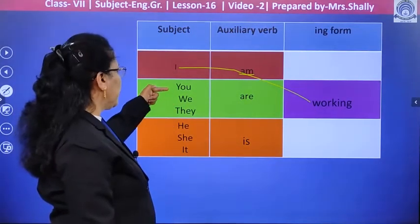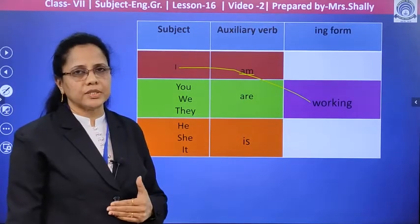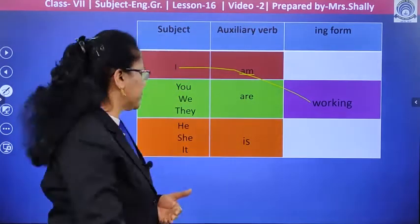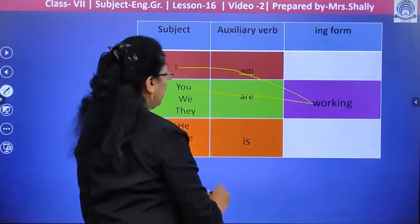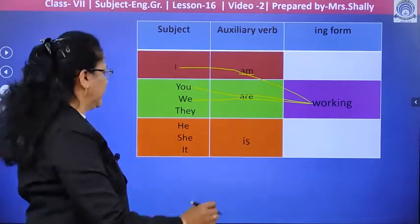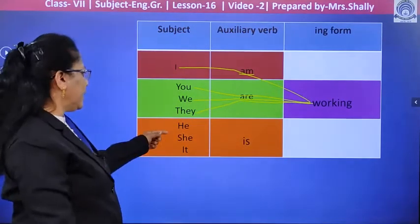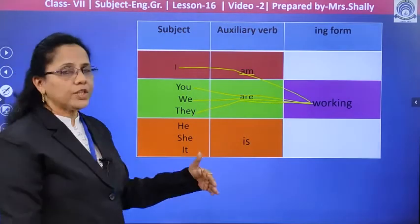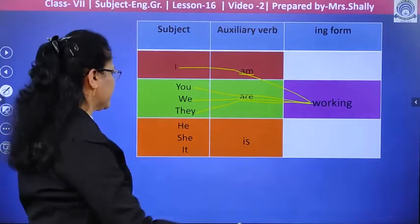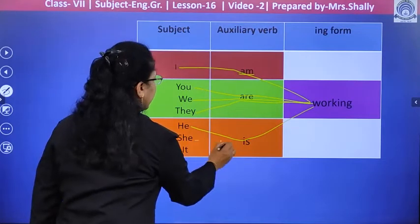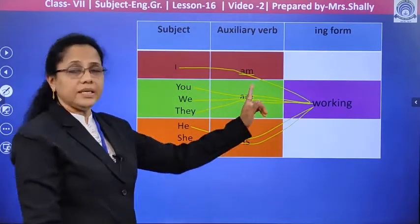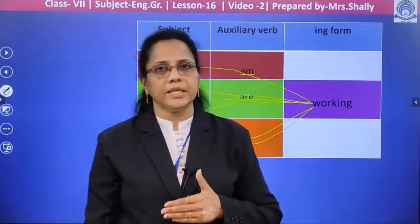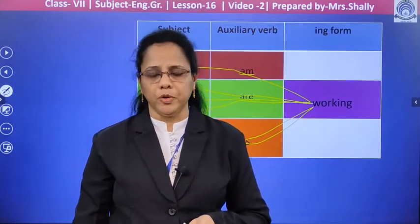With the subject 'you', 'we', or 'they', and any other plural subject, 'are' is used. So: you are working, we are working, they are working. Then if the subject is singular — the pronouns 'she', 'he', or 'it' — 'is' is to be used: he is working, she is working, it is working. To make a sentence in present continuous tense: subject plus is, am, or are, plus the ing form of the verb.